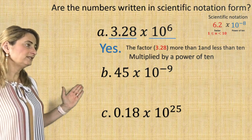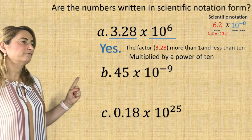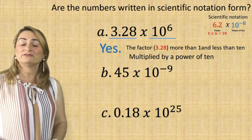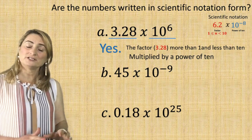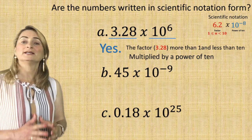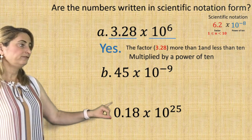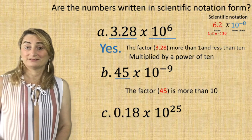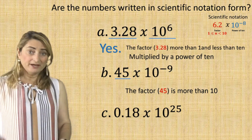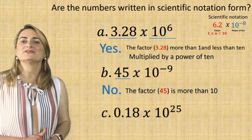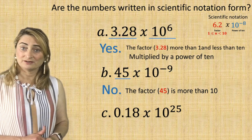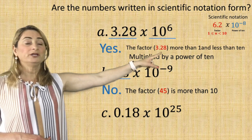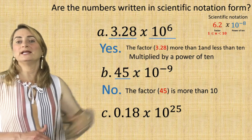Now look at the second example: 45 times 10 to the power of negative 9. The first thing to look at is the factor. The factor is 45, which is more than 10. So right away, it's not written in scientific notation because the factor has to be greater than or equal to 1 and less than 10.